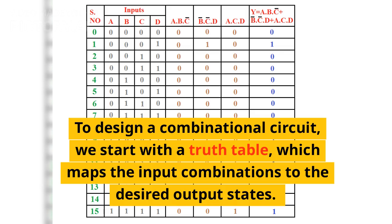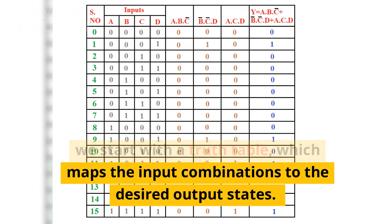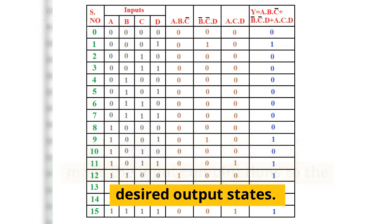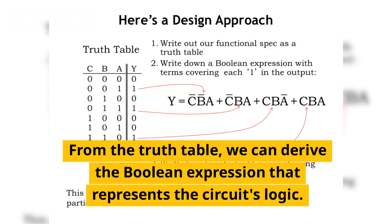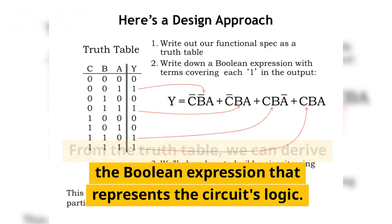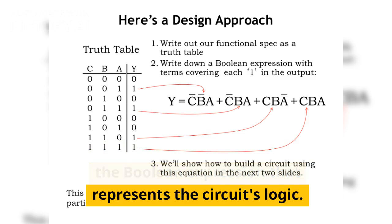To design a combinational circuit, we start with a truth table, which maps the input combinations to the desired output states. From the truth table, we can derive the Boolean expression that represents the circuit's logic.